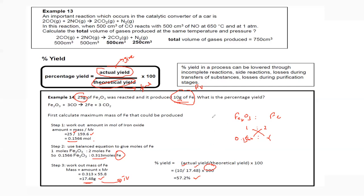Why are we not getting 100% yield? Percentage yield in processes can be lower due to incomplete reaction. Maybe all 25 grams of iron oxide does not decompose or does not react with carbon monoxide to form iron — that's one possibility.